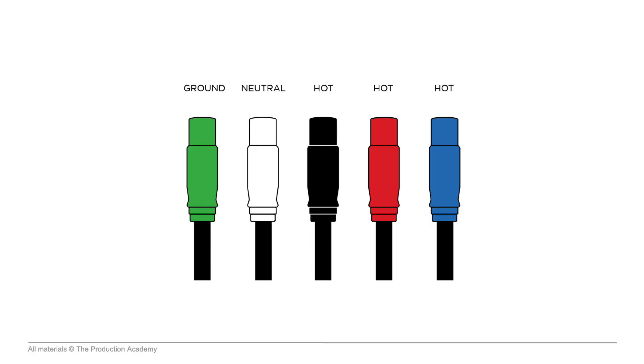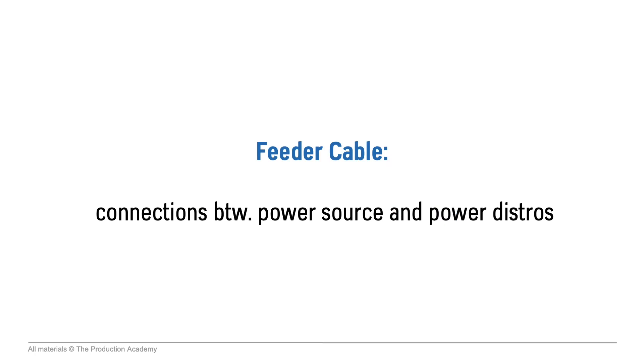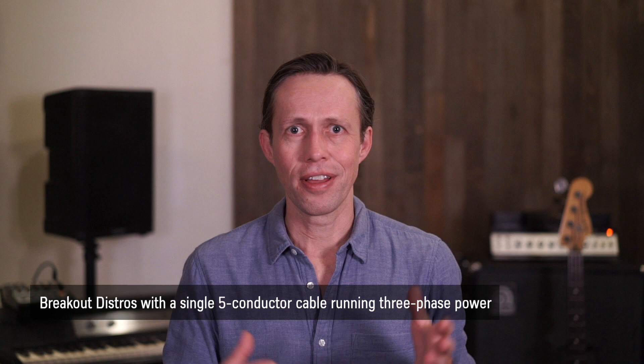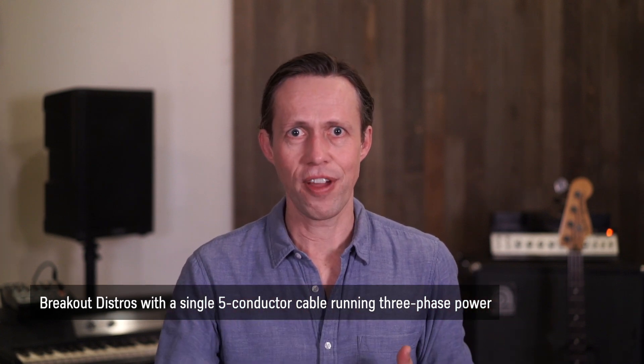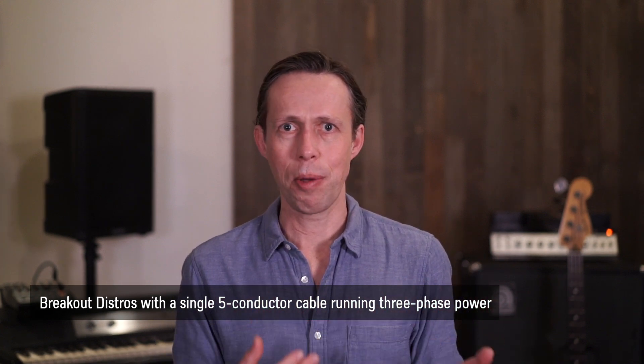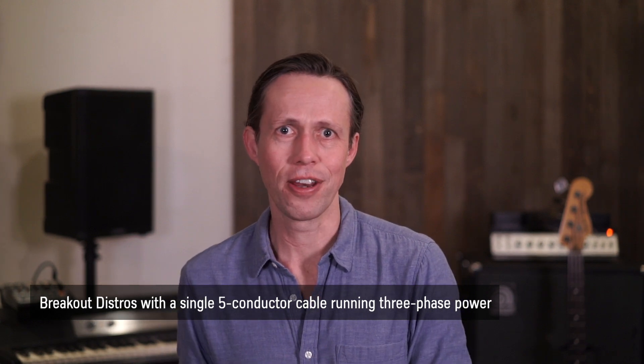We connect to 3-phase power by using feeder cable, which is five separate heavy-duty copper cables — three for the hot legs, one for neutral, and one for ground. These are the connections between the power source, either the electrical grid or a generator, and our specialized power distros. These distros are usually designed for audio, lighting, or video, and are where we break out power for our entire system. From the main distros, we often run smaller breakout distros with a single five-conductor cable running 3-phase power out to them, so we can easily get lots of power to other parts of the venue, like front of house.